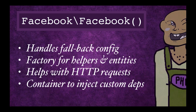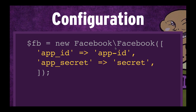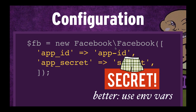It helps making HTTP requests and responses, and it's a container to inject custom dependencies that help us tie the SDK into our web framework. Here's an example of how we would instantiate the super service — we send in an array of configuration in the constructor with the app ID and the app secret. Those are the two required variables. A little secret: you want to keep your app secret secret. It's very important to keep that thing secure, so a better thing to do would be to store that information in environment variables.